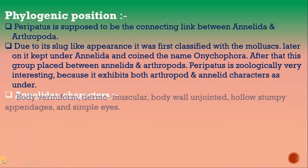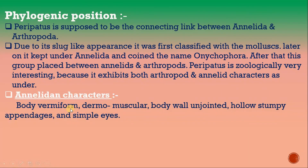Anelidian characters of Peripatus include: a dermo-muscular body wall, and unjointed hollow stumpy appendages.